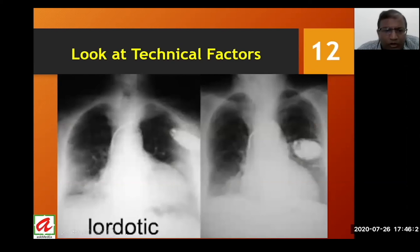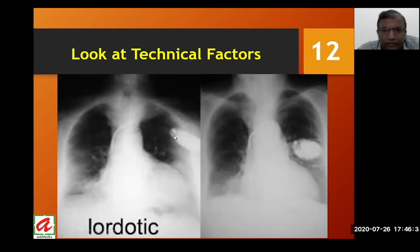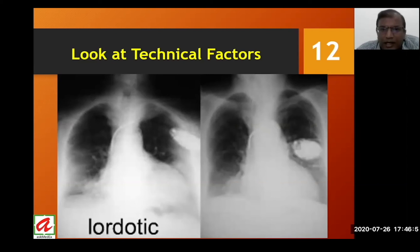The lordotic view is performed specifically for the apices of the lung. On a normal PA view, the apices are overlapped by the medial ends of the clavicles on both sides. Whenever an opacity is seen in the apical region and there is uncertainty whether it is a true lesion or an accompanying shadow, the apical lordotic view clearly demonstrates whether the lung apices are diseased or not.